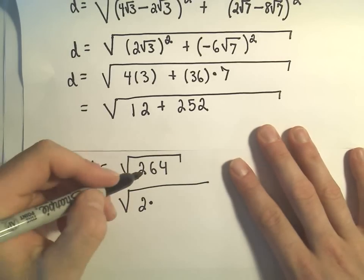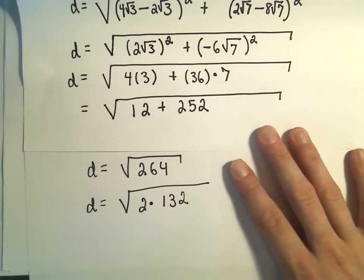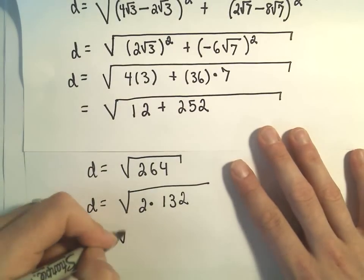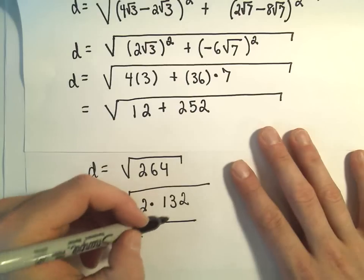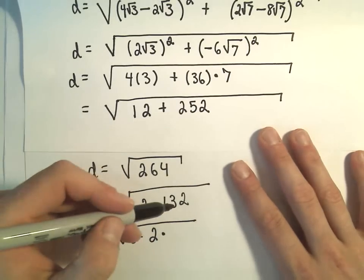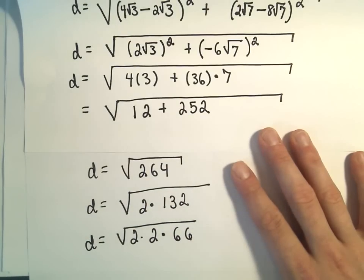If we divide each digit, I believe we would get 132, which means I could factor this again, since 132 is even. Since that's even, 2 times what? How about 66? I believe that would get us 132.